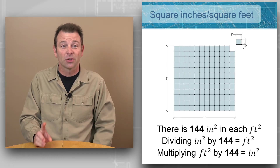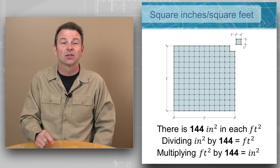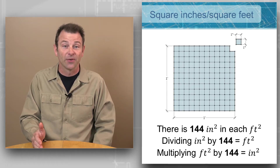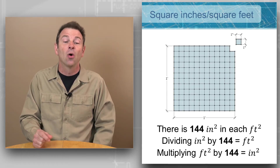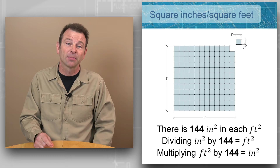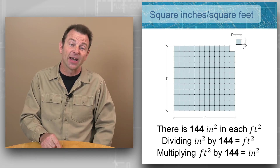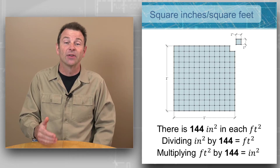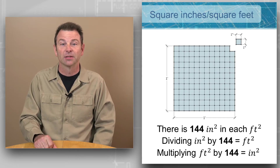We can divide our square inches by 144 to arrive at our square foot measurement, or we can multiply our square feet by this same factor of 144 to arrive at our square inch measurement.